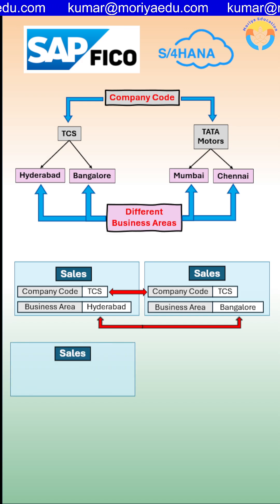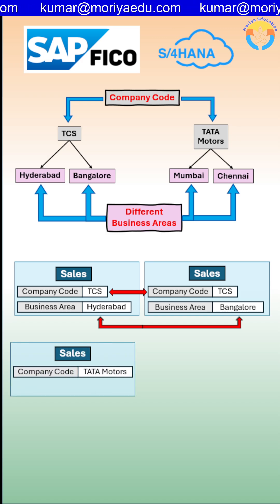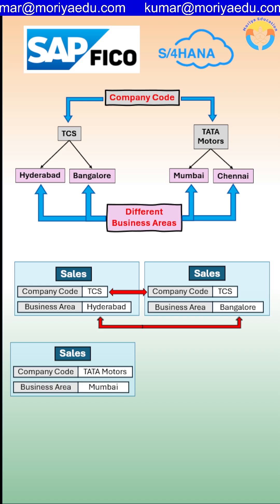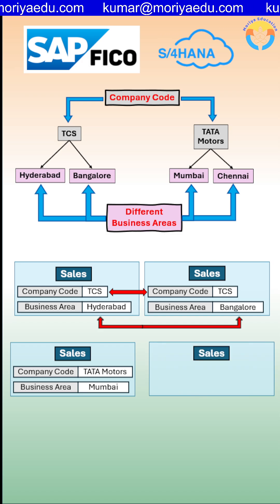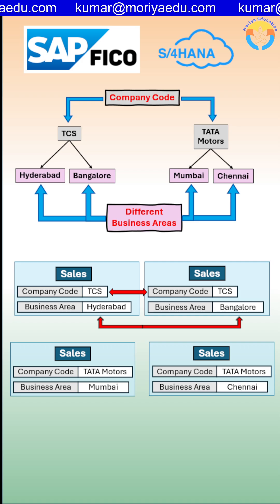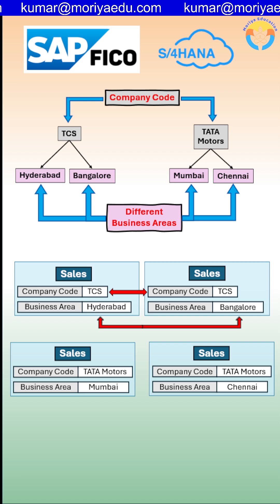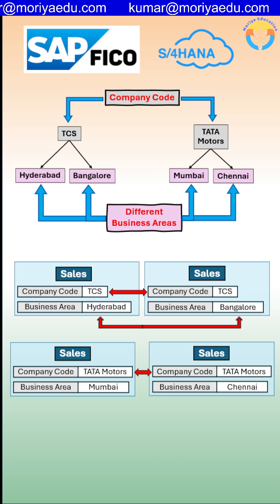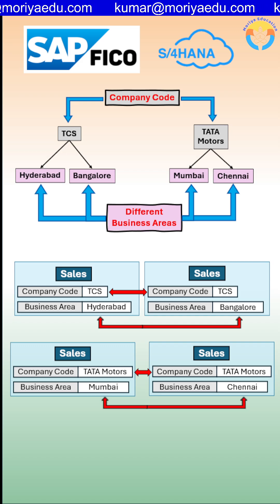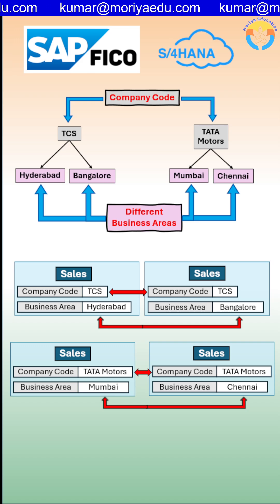In the same way, if sales happens in company code Tata Motors, the business area will be Mumbai. So here, the company code is Tata Motors, but the business area is different, and the company code is different from TCS. So we can adjust that accordingly.